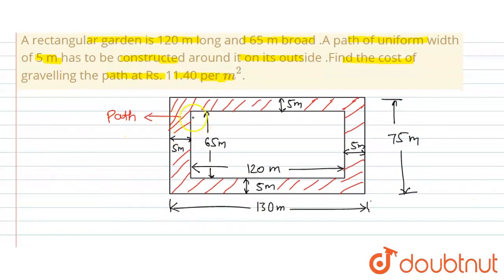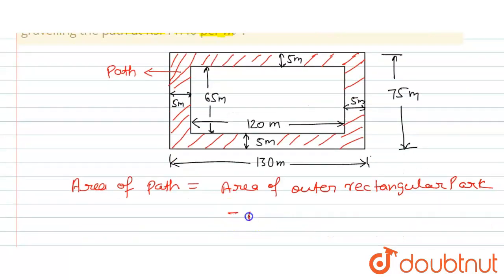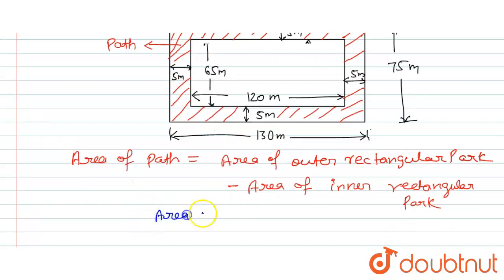We will subtract the area of inner boundary, the inner rectangular part, from the outer rectangular part. So area of path can be calculated by area of outer rectangular part minus area of inner rectangular part.